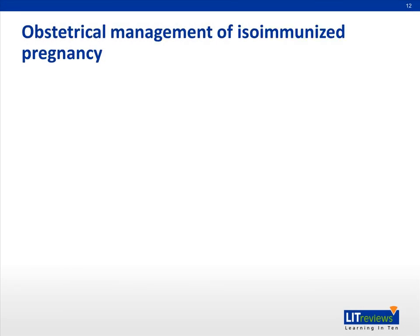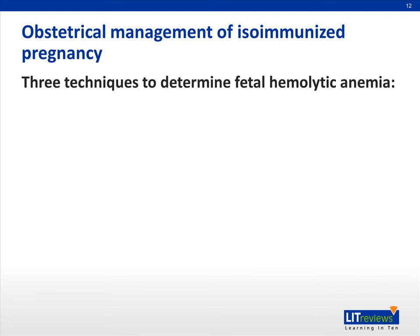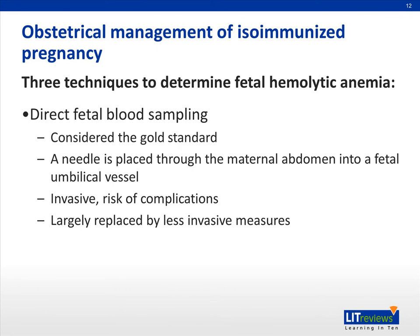Another important clinical step in the evaluation of the isoimmunized patient is the determination of the severity of the effects on the fetus. A large part of this is monitoring the severity of fetal anemia. There are three methods currently used to ascertain if the at-risk fetus is actually anemic. The first method is fetal blood sampling, the gold standard to which all are compared. This procedure is the most invasive and thus carries the highest risk. A needle is placed through the maternal abdomen into a fetal vessel via direct ultrasound guidance, and one or two milliliters of fetal blood is obtained. Preparations for intrauterine transfusion are also in place at the time of fetal blood sampling, to proceed with intrauterine transfusion if necessary.